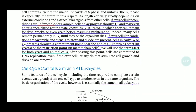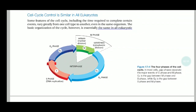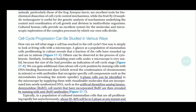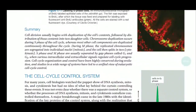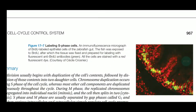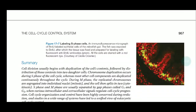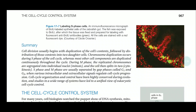Coming to cell cycle control, which is similar in all eukaryotes — it shows the four phases of the cell cycle. This is the immunofluorescence micrograph of BR2-level epithelial cells. The cells are labeled with fluorescent anti-BrdU antibodies, shown in green. The stain labels cells in the S-phase stage, making it a good labeling agent.